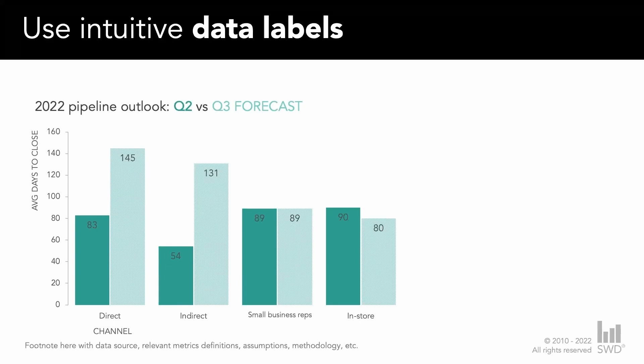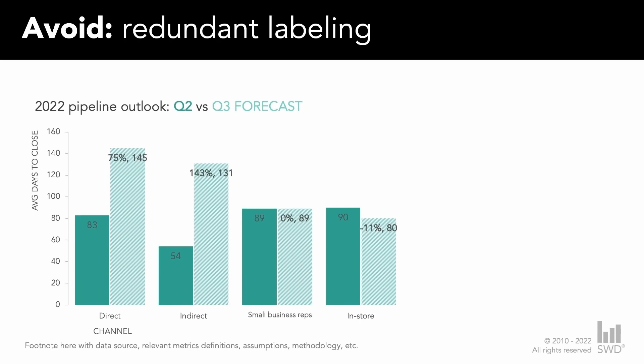What often happens is that in an effort to help our audience, we start adding more data labels in anticipation of questions we're going to get. For example, if our audience might ask about the quarter-over-quarter change — the difference in the heights of the bars — sometimes we start adding variations of the same metric within the bars itself. But those percentages would take a lot of work to figure out for the first time, and they're also redundant because that change is already visually encoded in the difference in bar heights. So that's something we want to avoid when it comes to labeling.